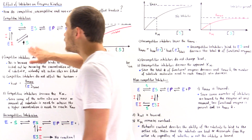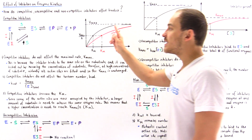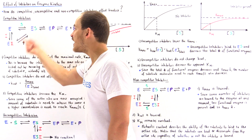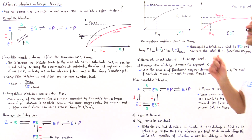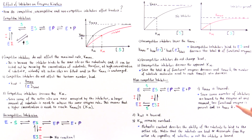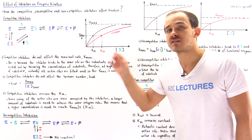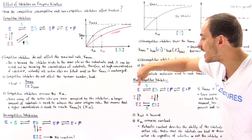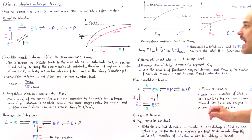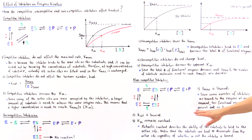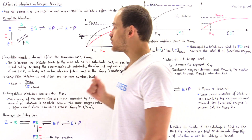In competitive inhibition, the K-M value increased because we need a higher concentration of substrate to reach that same particular rate. But in the case of non-competitive inhibition, the substrate is just as likely to bind onto the enzyme in the absence as in the presence of that inhibitor, and so the K-M value does not actually change.